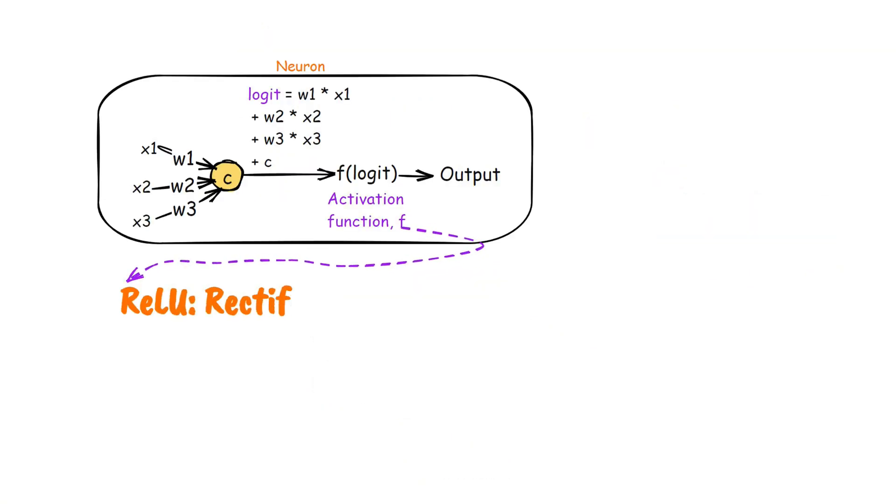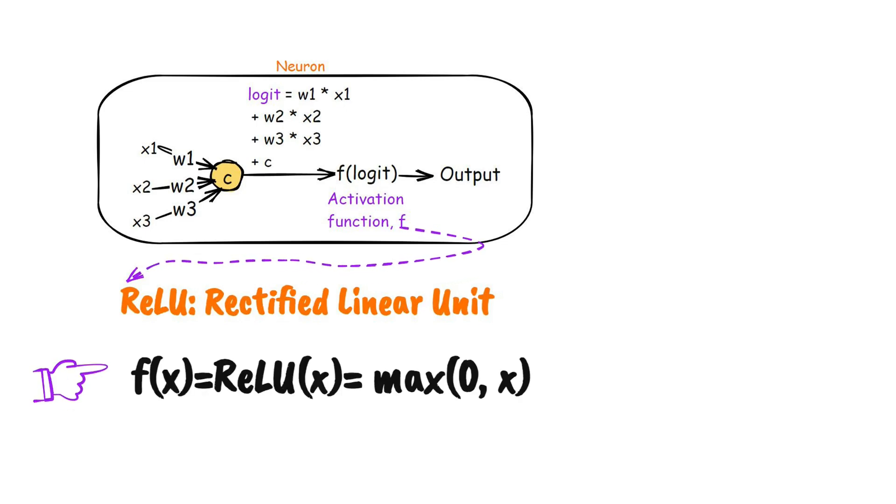It stands for Rectified Linear Unit. ReLU is by far the most widely used activation function in modern neural networks. It allows the model to activate or deactivate neurons by setting negative input values to zero while leaving positive values unchanged. ReLU introduces non-linearity while being computationally efficient.